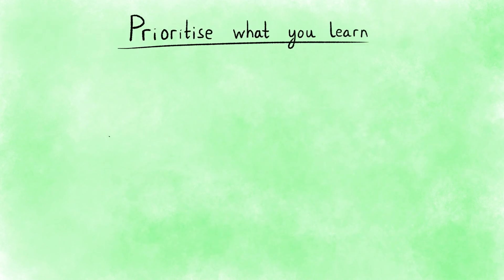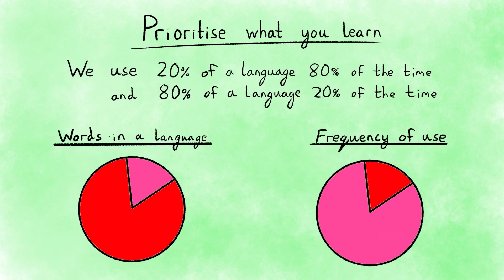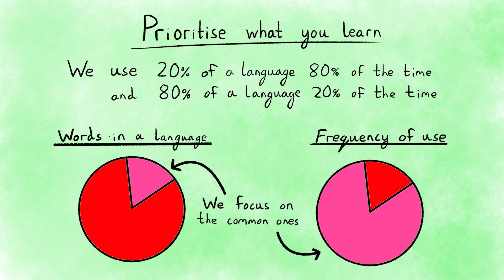Because of all these different rules, phrasal verbs can be tricky for English learners. That's why it's very important to prioritise what you learn. They say we use 20% of a language 80% of the time, and 80% of a language 20% of the time. In this series, we try and focus on the commonly used phrasal verbs — the 20% that we use 80% of the time.